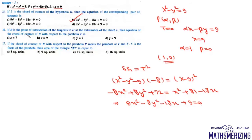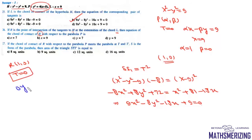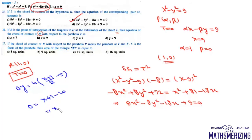For Q4: if R is the point of intersection of tangents to H at the extremities of chord L, then R is the point (1, 0). For parabola P, the equation of chord of contact from (1, 0) using T = 0 gives 0·y = 4·(x+1)/2 − 5, which simplifies to x = 9. So the chord of contact is again the line L: x = 9.